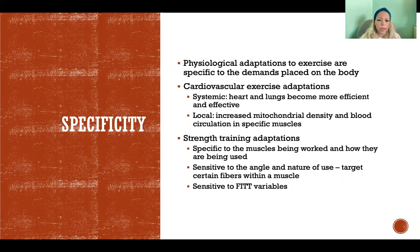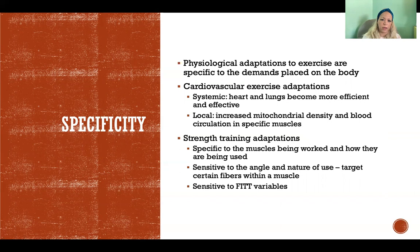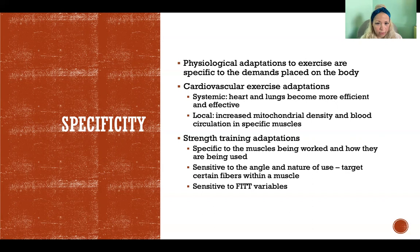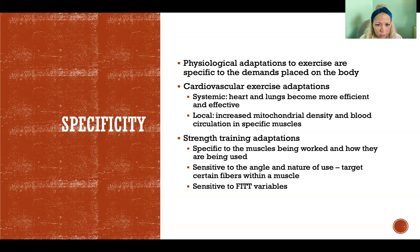For example, if you're training for a marathon, doing other types of cardiovascular exercise like cycling will also improve the systemic effects — the heart and lungs will become more efficient — and that will help towards your marathon training. But the local adaptations that make you better at running can only be achieved by running. Cycling will give you local adaptations to cycling, and the systemic ones cross over, but the local ones won't necessarily, depending on which muscles you're specifically using.